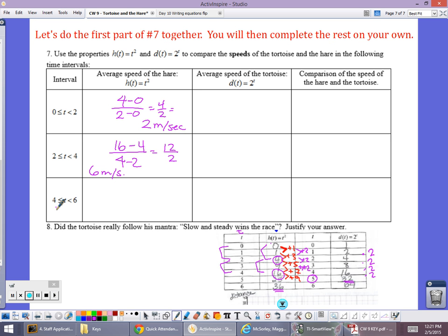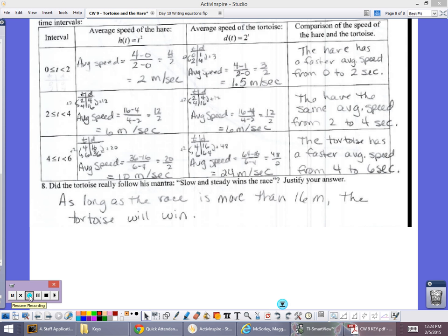Does everybody understand what the job is? The final answer would be this. It should be 10 meters per second, 6 meters per second and 2. Here we have 1.5, 6, and 24. So here we've got the hare moving faster. Here we have they're the same speed. And here we have the tortoise moving faster. So that is what we did. Hopefully that was helpful if anybody's absent. Thanks for watching.